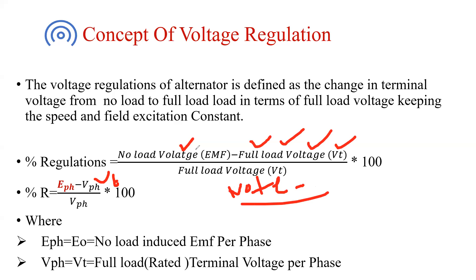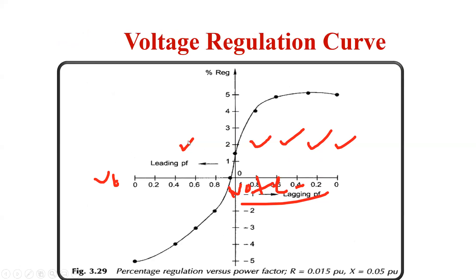Our final objective is to calculate each and every value with full accuracy. The fundamental concept is that we must calculate per-phase voltage. This concept will be repeated throughout all three units because it is important in every topic — many students make this mistake in voltage regulation calculations. Now, let's understand the voltage regulation curve of the alternator.